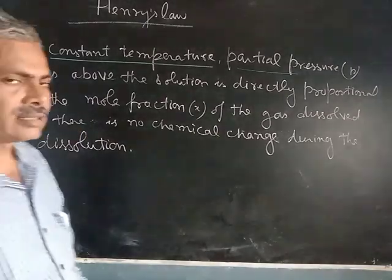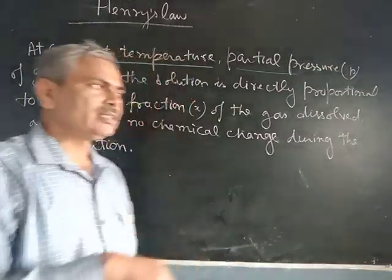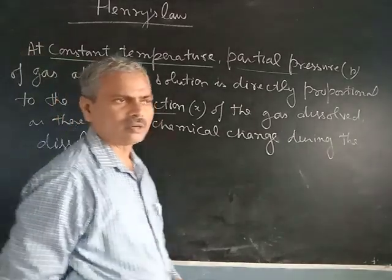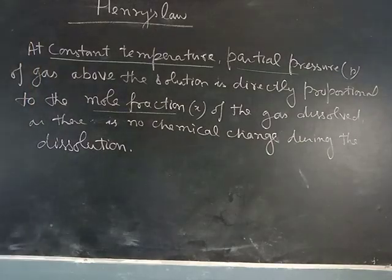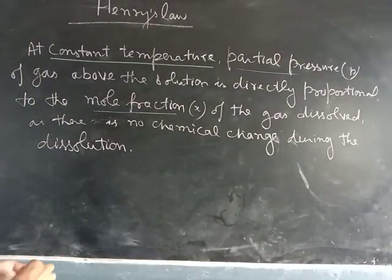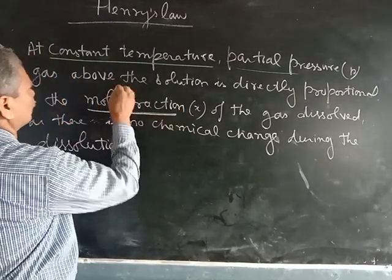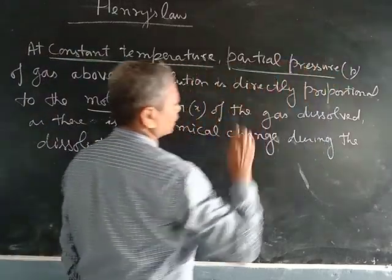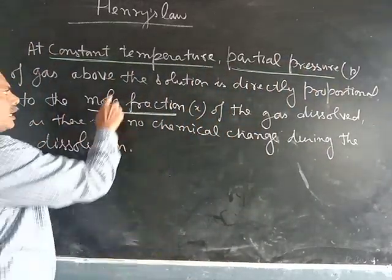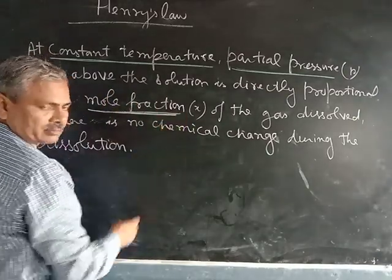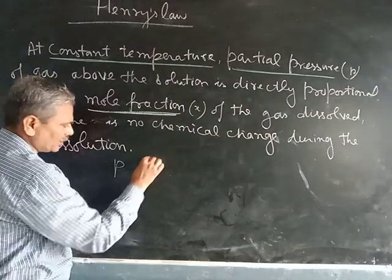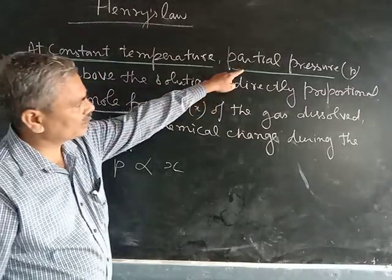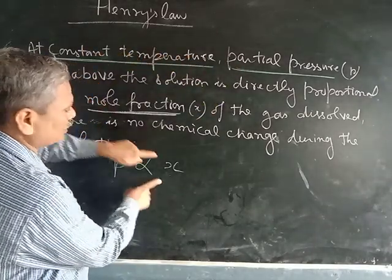The partial pressure of the gas above the solution is directly proportional to the mole fraction of the gas dissolved. We write: P is directly proportional to X (mole fraction). Removing the proportionality sign and introducing a constant, P equals KH times X, where KH is Henry's Law constant.